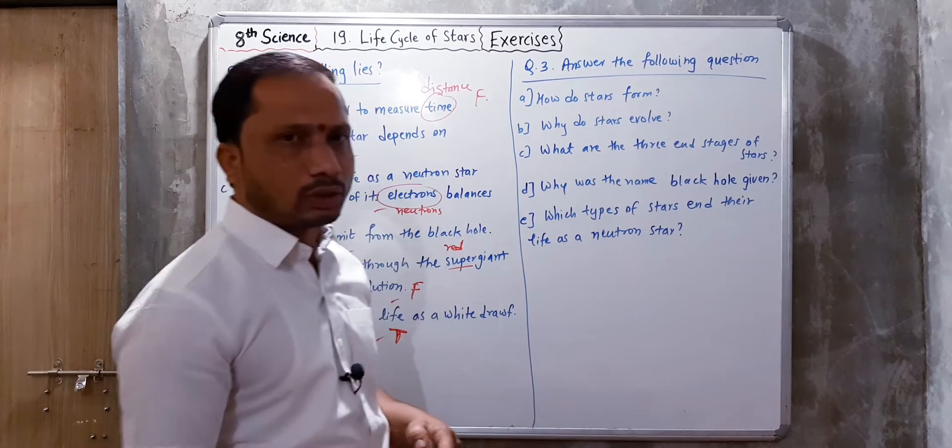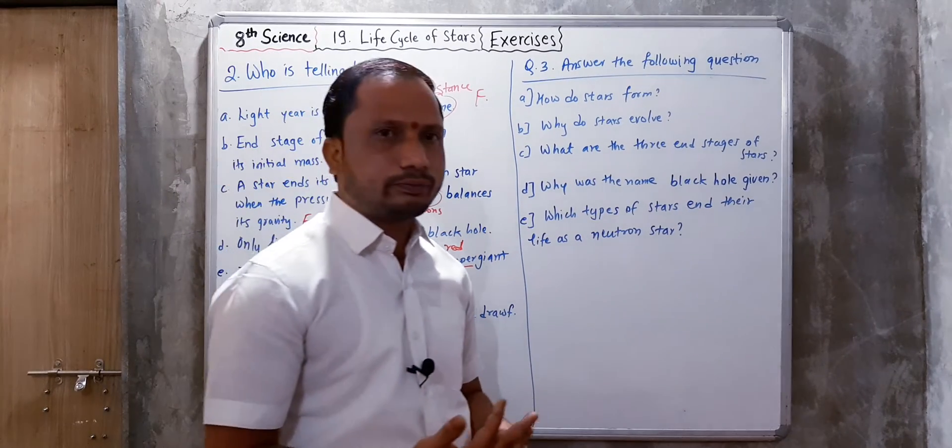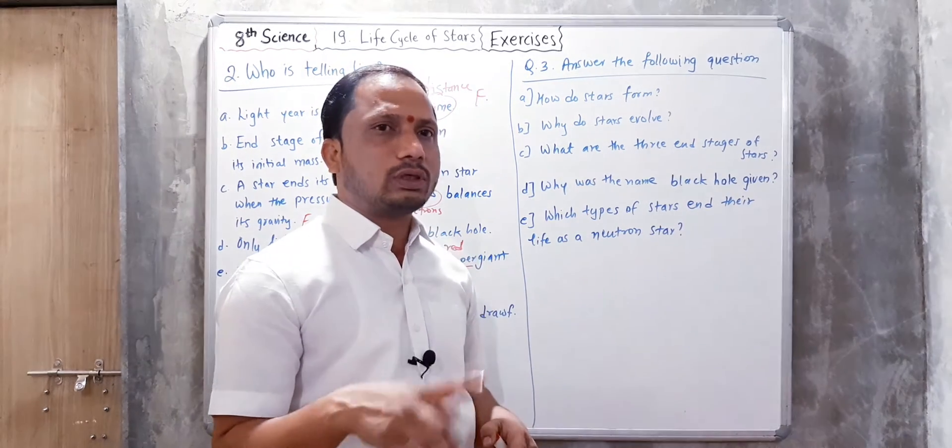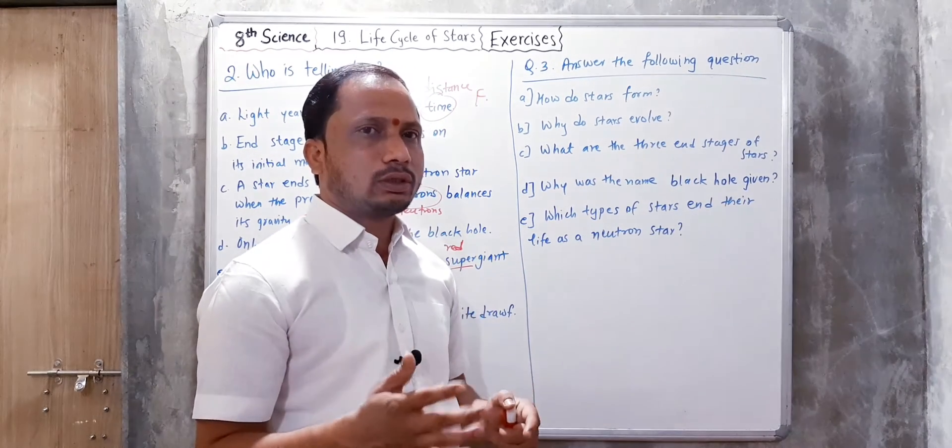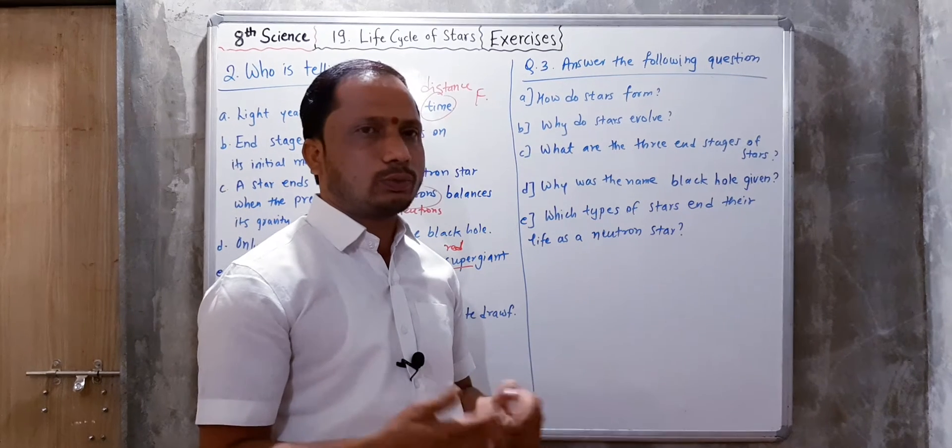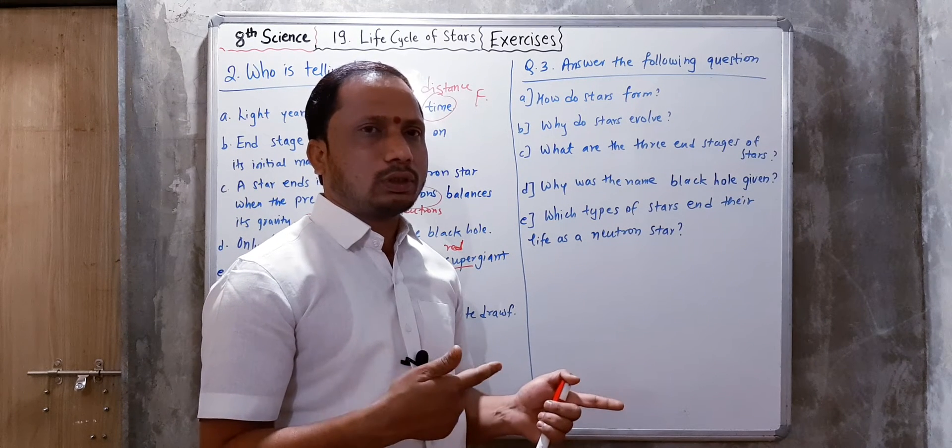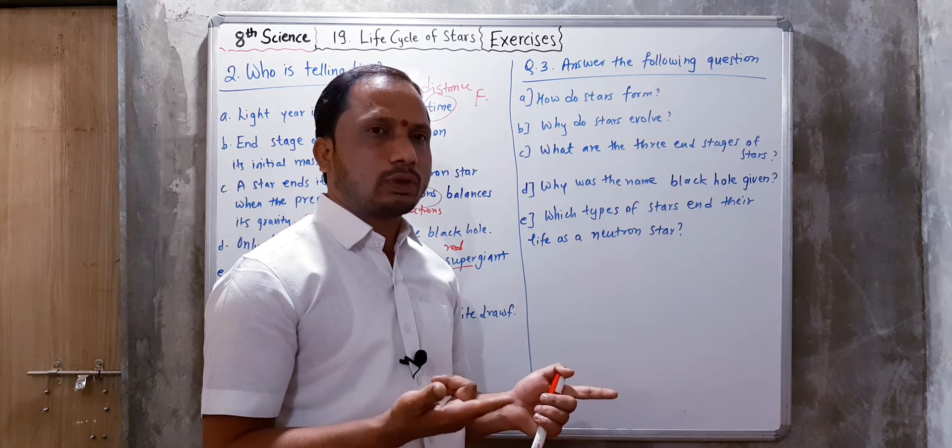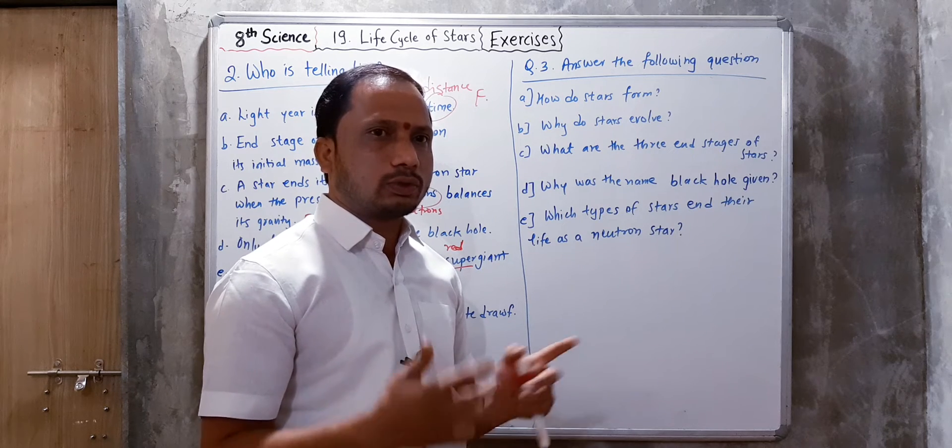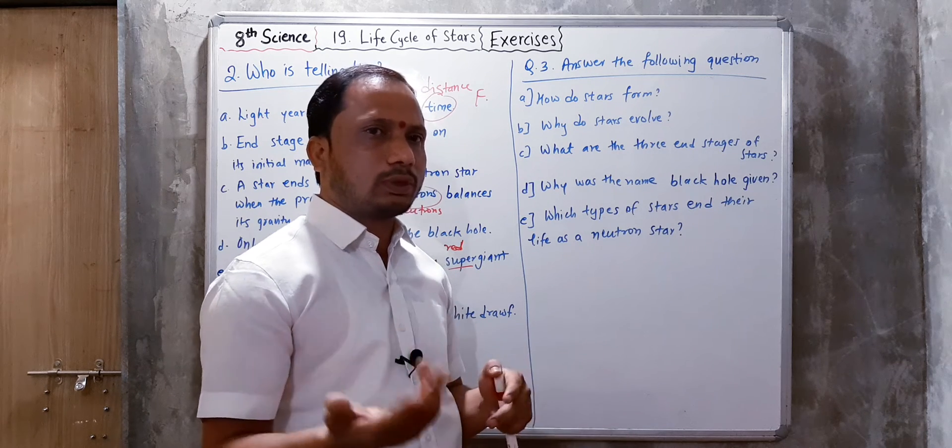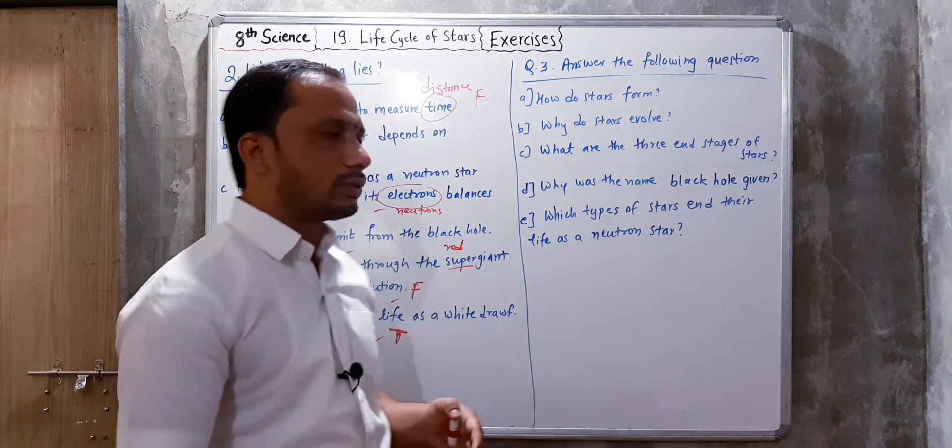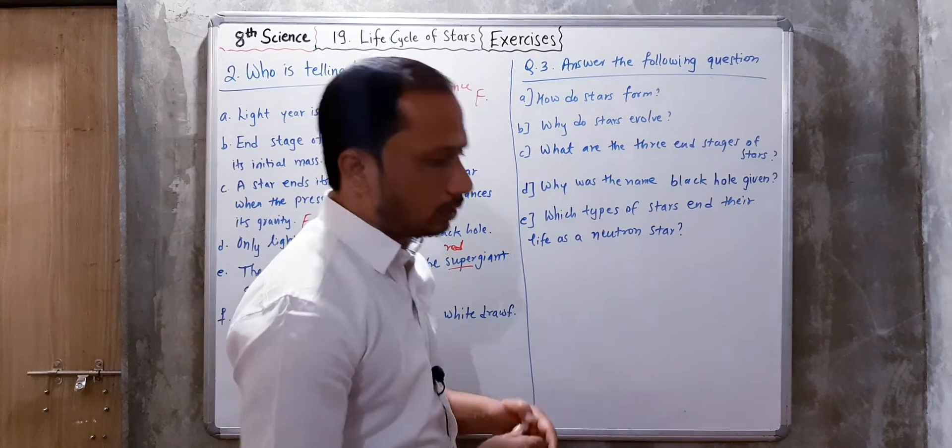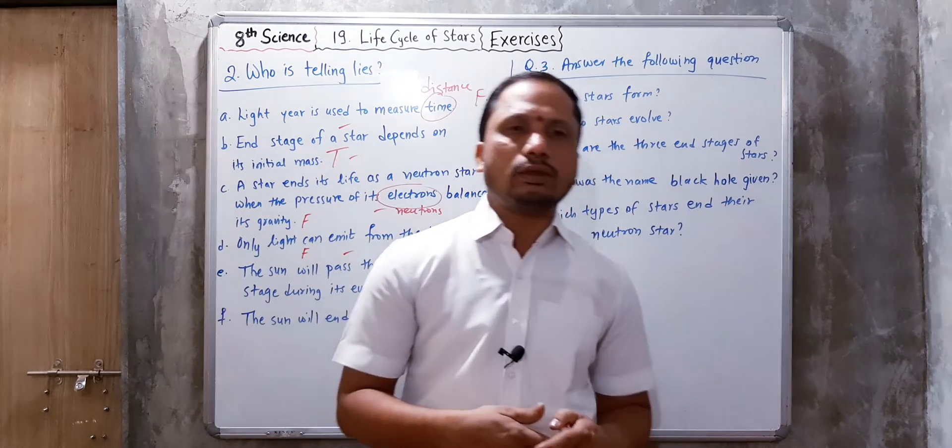What are the three end stages of stars? White dwarf, neutron star, and black hole. These are the three end stages of stars, which occur after supernova explosions.